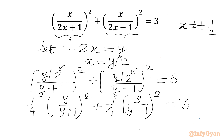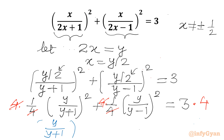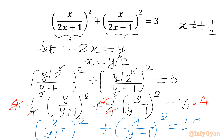Now I will multiply both sides by 4. The 4 cancels on the left-hand side, giving us y over (y+1) whole square plus y over (y-1) whole square equal to 3 times 4, which is 12.